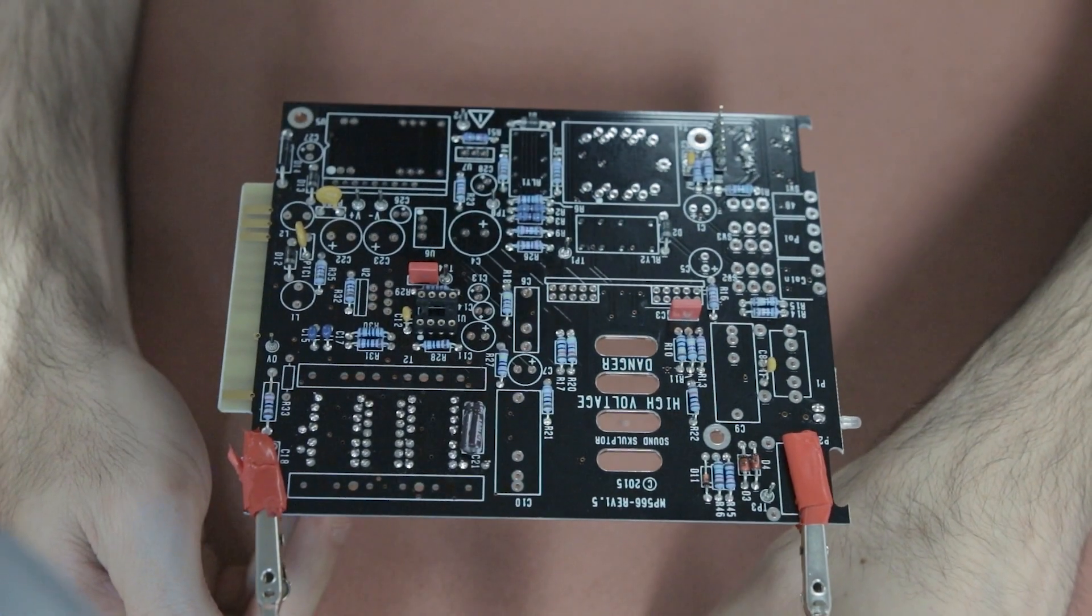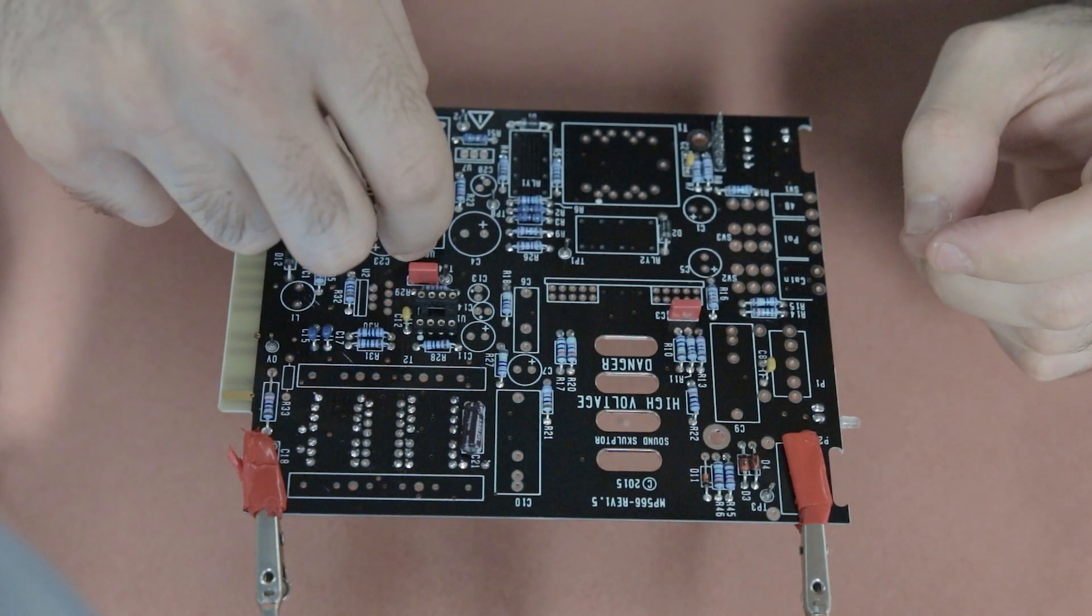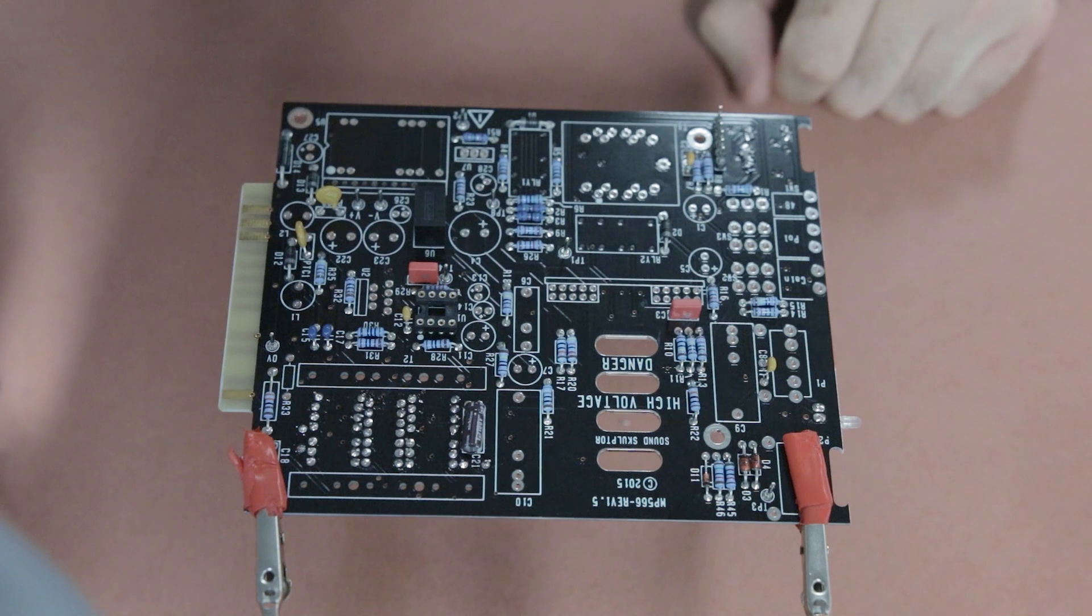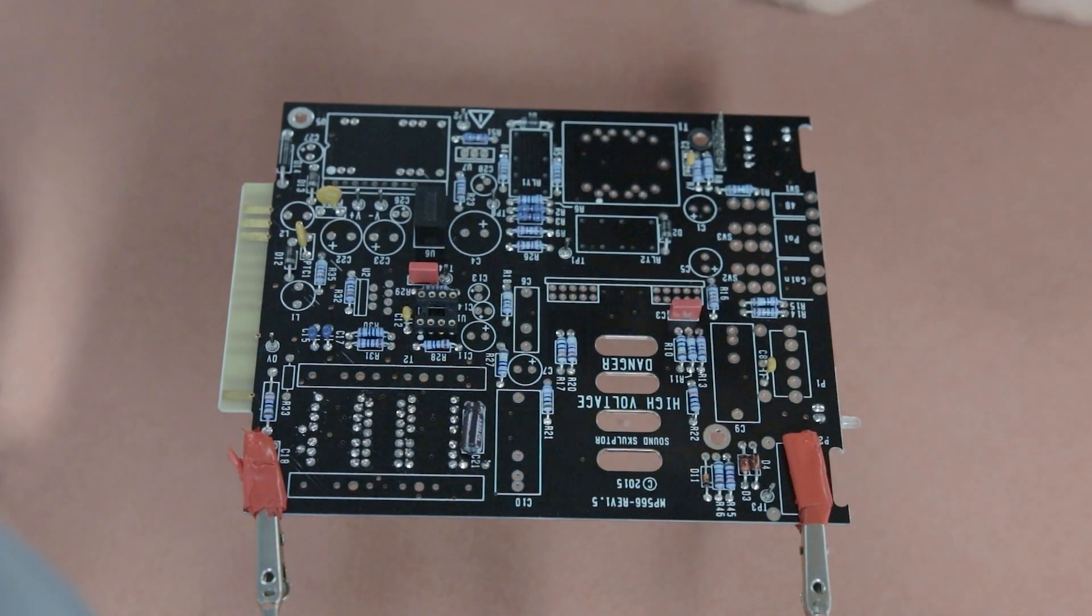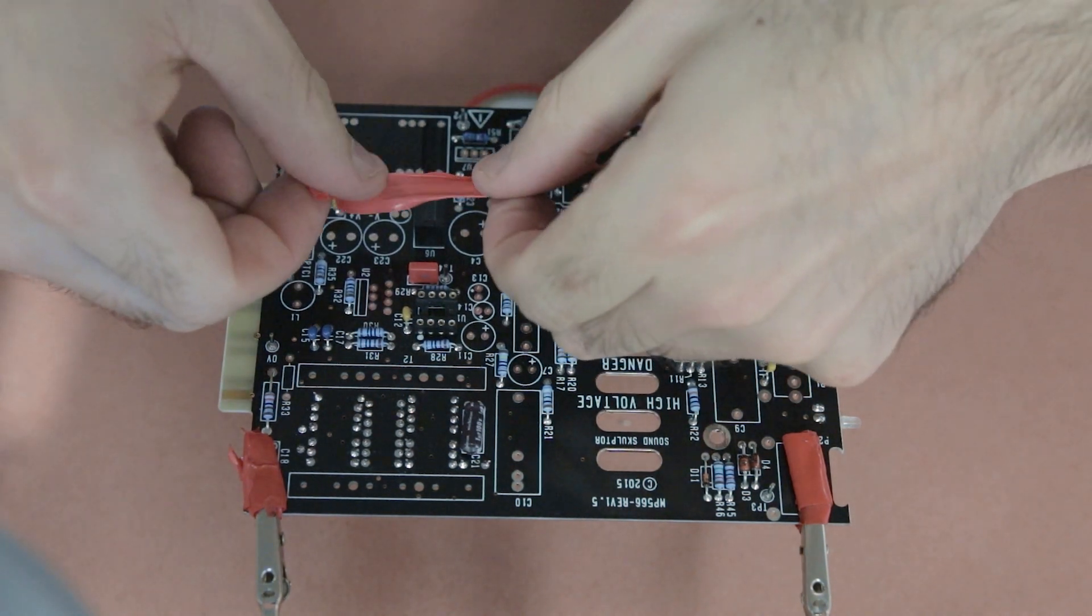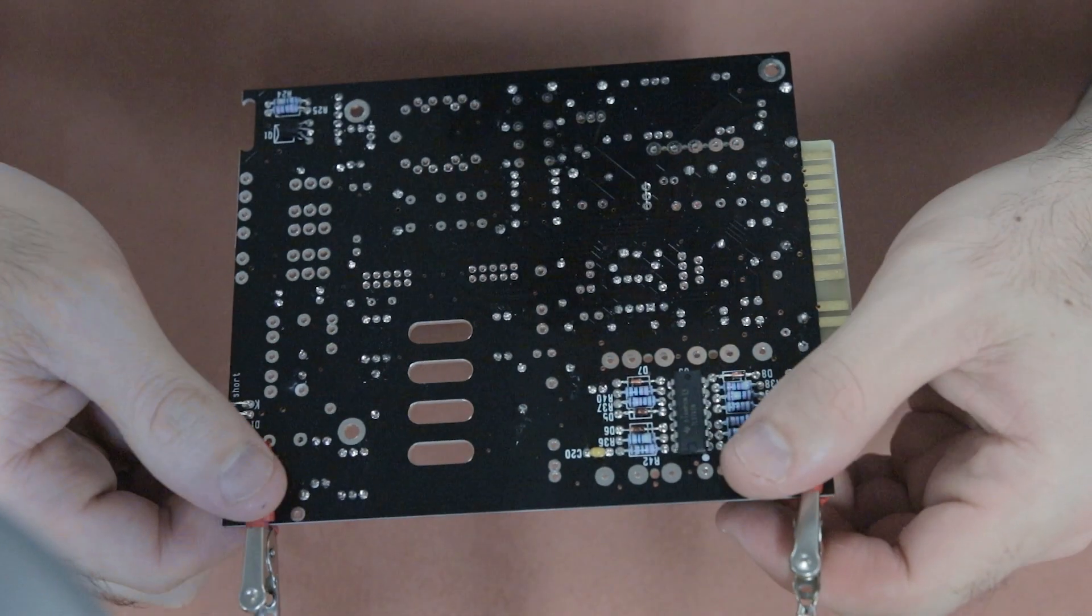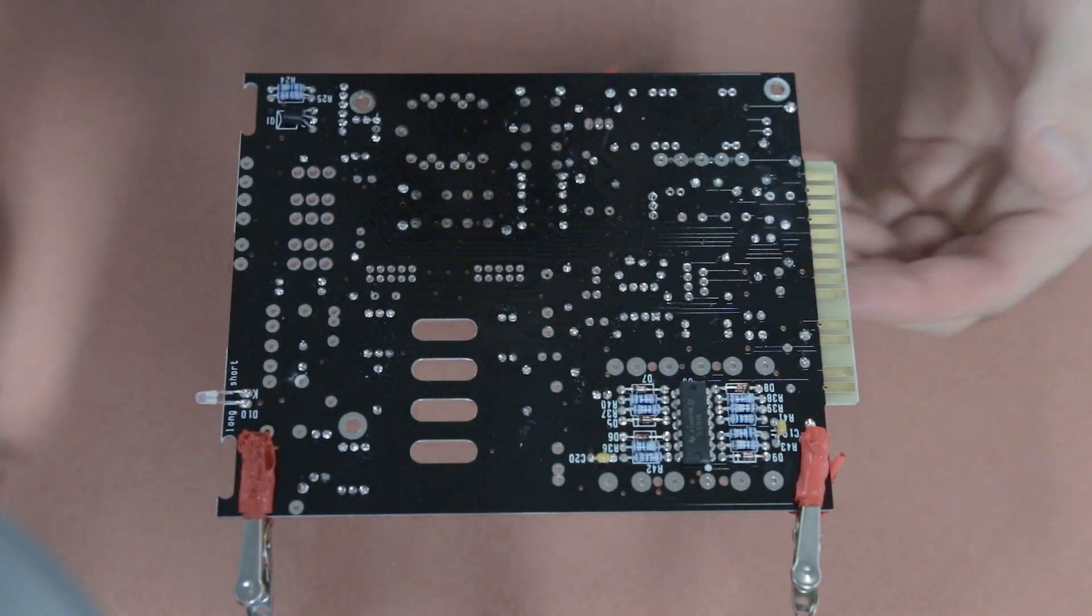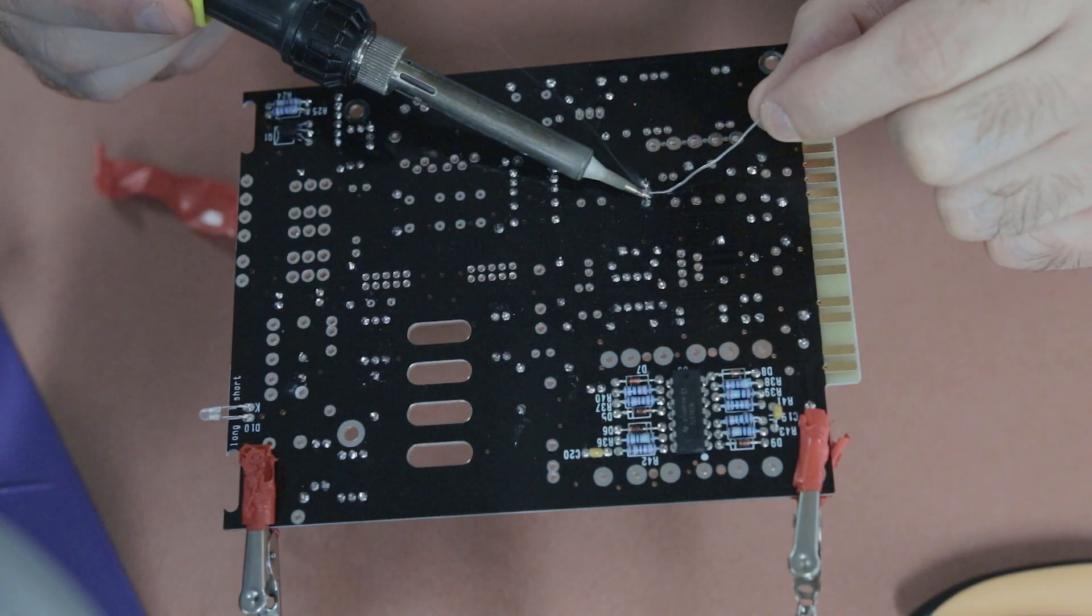So welcome back to the second part of the MP566 build and the first component we're going to be soldering today is this little voltage regulator. It's a 3 pin little component and it's pretty simple, I just did what I normally do with most of my components this size, I used some electrical tape to hold it in place, soldered one of the legs, checked the orientation and then soldered the rest of the legs and then gave them a snip.